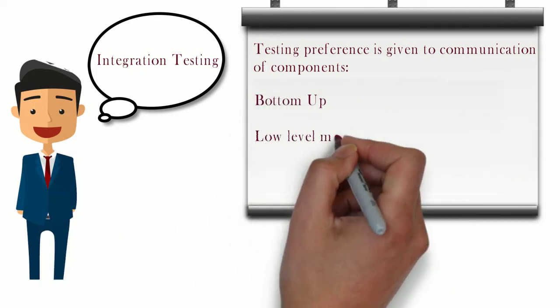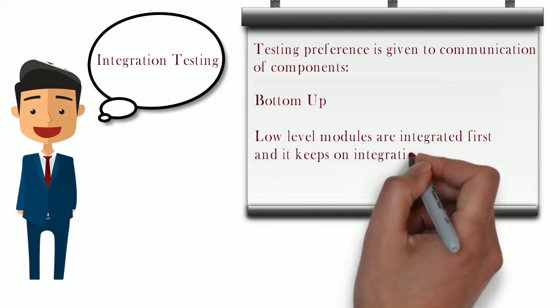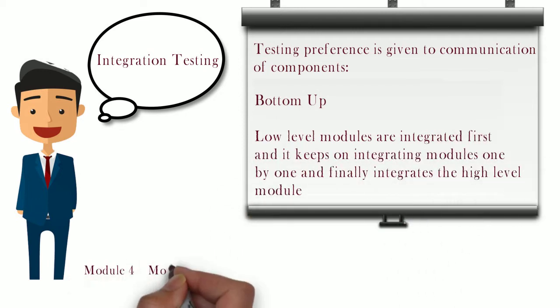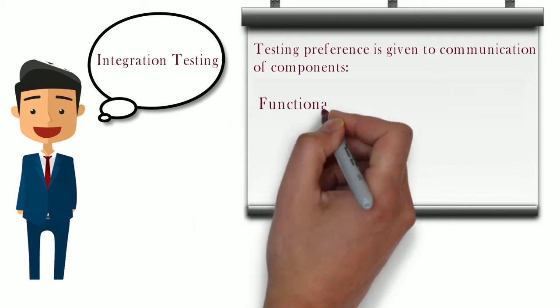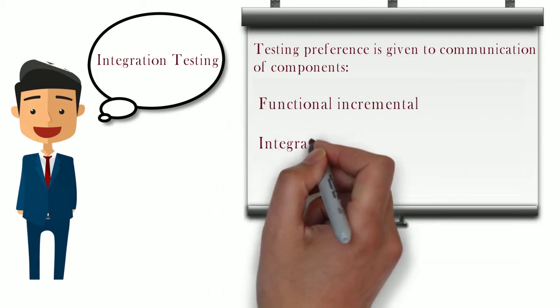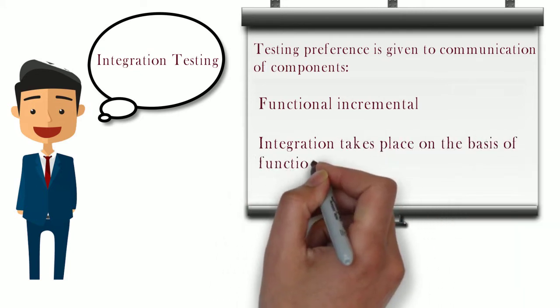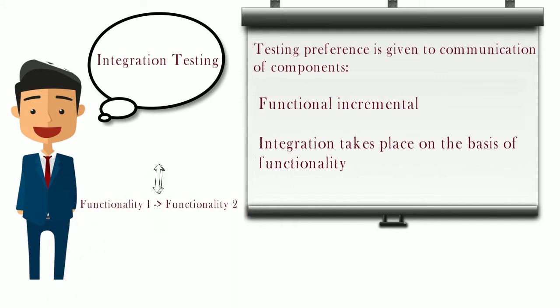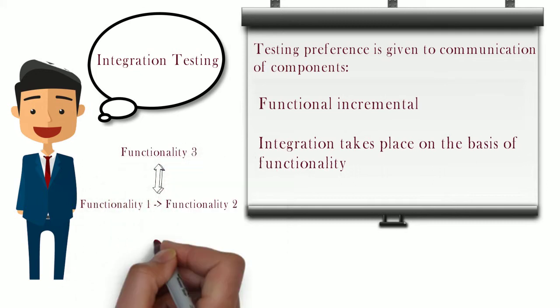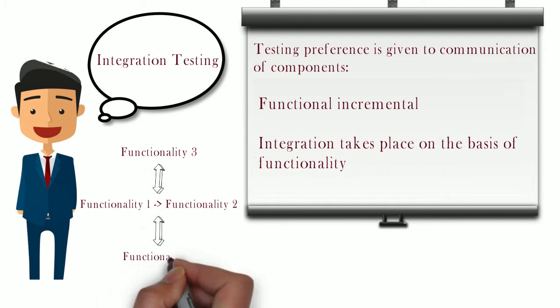The bottom-up approach is the opposite of top-down — the lower layer module is integrated first and it keeps integrating until the upper layer is completed. The final approach is functional integration, where integration happens based on functionality. In our example, customer registration integrates with placing an order and is tested, then the modification and cancellation component is integrated. The different approaches are: big bang, top-down, bottom-up, and functional incremental.